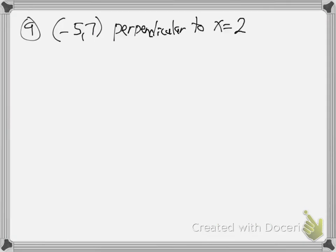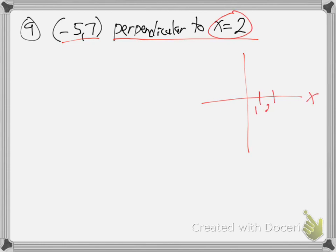So here's number 9. They're telling me that the line goes through that point and is perpendicular to x equals 2. So again, we need the slope. Let's draw what the line x equals 2 looks like. We go 1, 2 on the x-axis. That line right there is x equals 2.